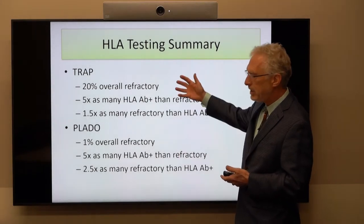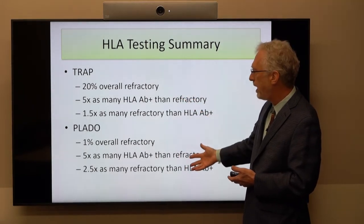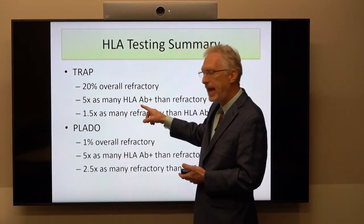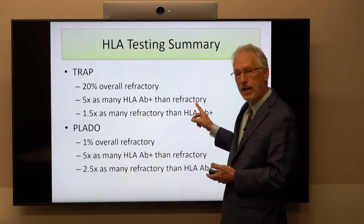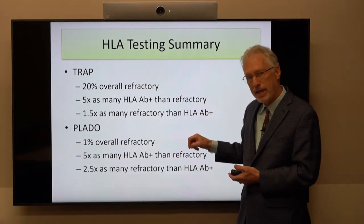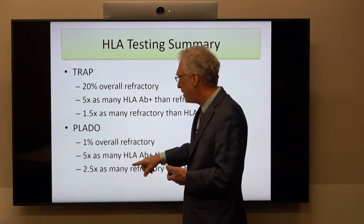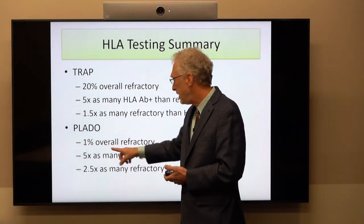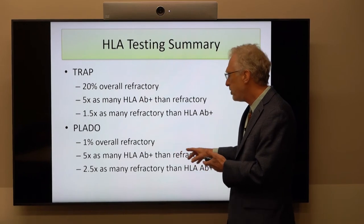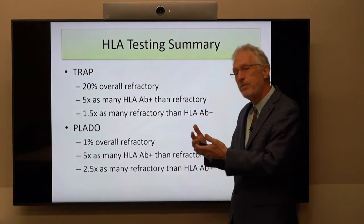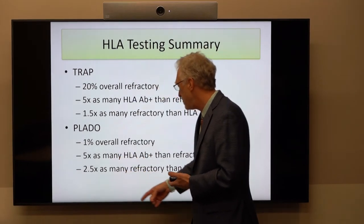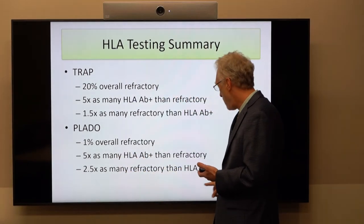Summarizing these two studies: in the 1990s TRAP study, there was a 20% overall refractory rate, but 5 times as many patients produced HLA antibodies as actually became refractory, and 1.5 times as many patients were refractory as had HLA antibodies. In the PLATO study 20 years later, only 1% of all patients were refractory with HLA antibodies, there were 5 times as many HLA antibody-positive patients as refractory patients, and about 2.5 times as many patients were refractory without HLA antibodies.